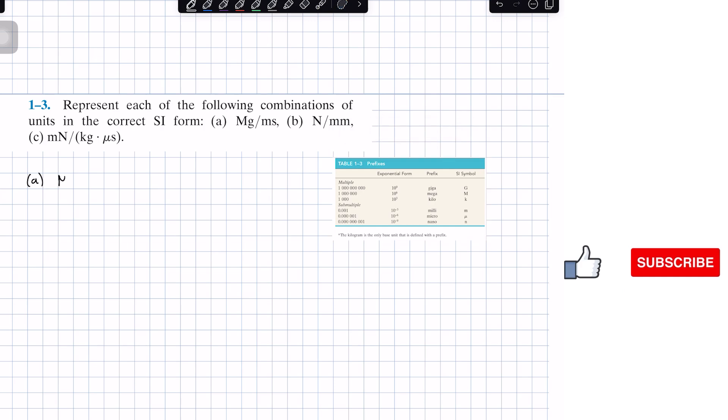We got megagram over millisecond. Megagram becomes 10 to the positive 6 grams, and then the millisecond is 10 to the negative 3 seconds. When we simplify this fraction, what we have is 10 to the positive 9 grams per second.